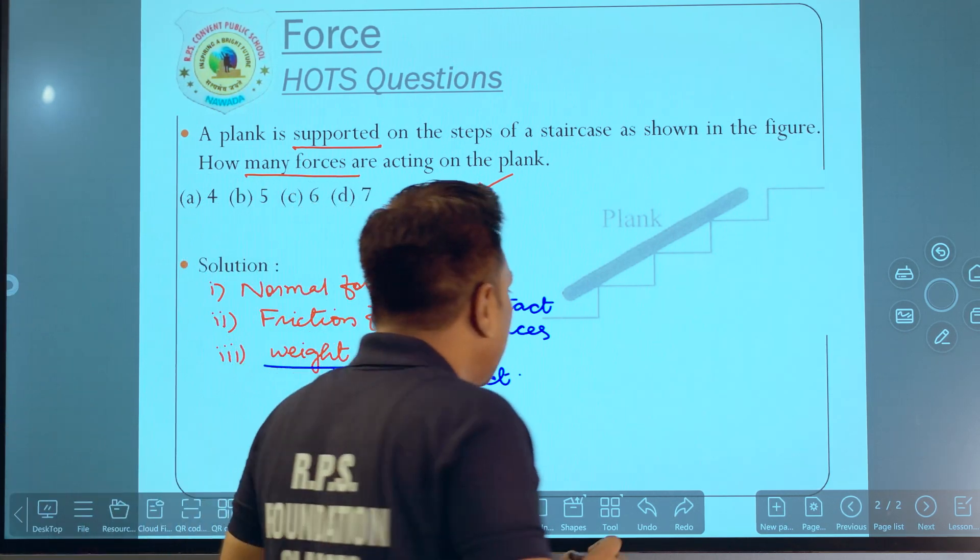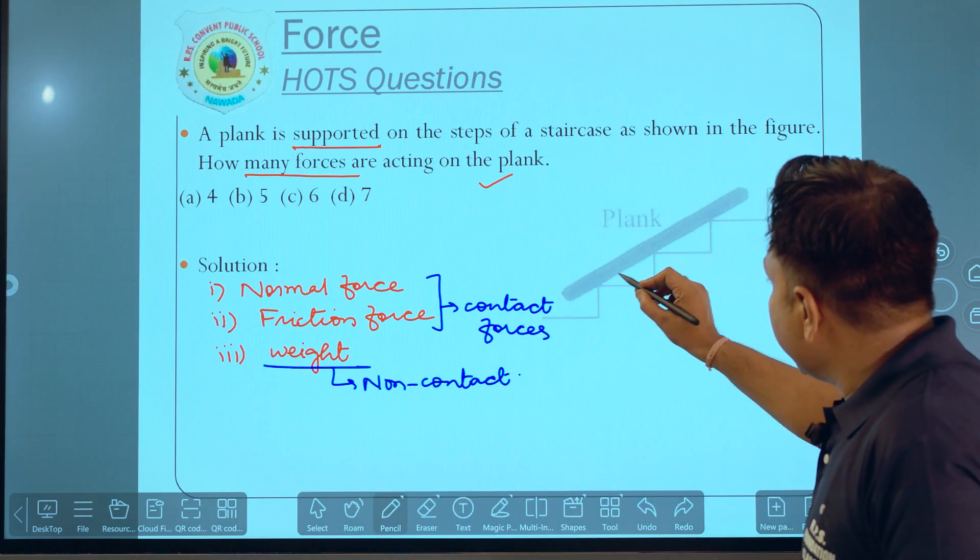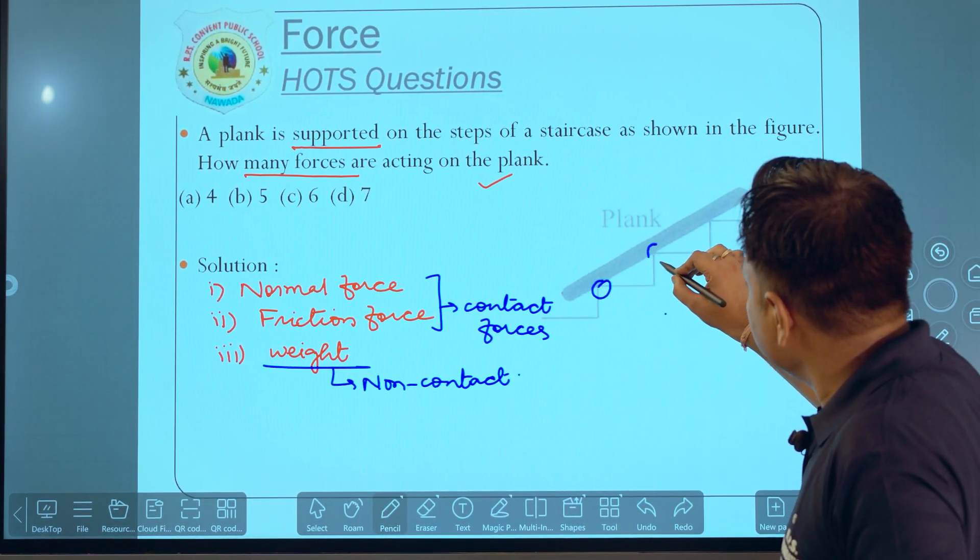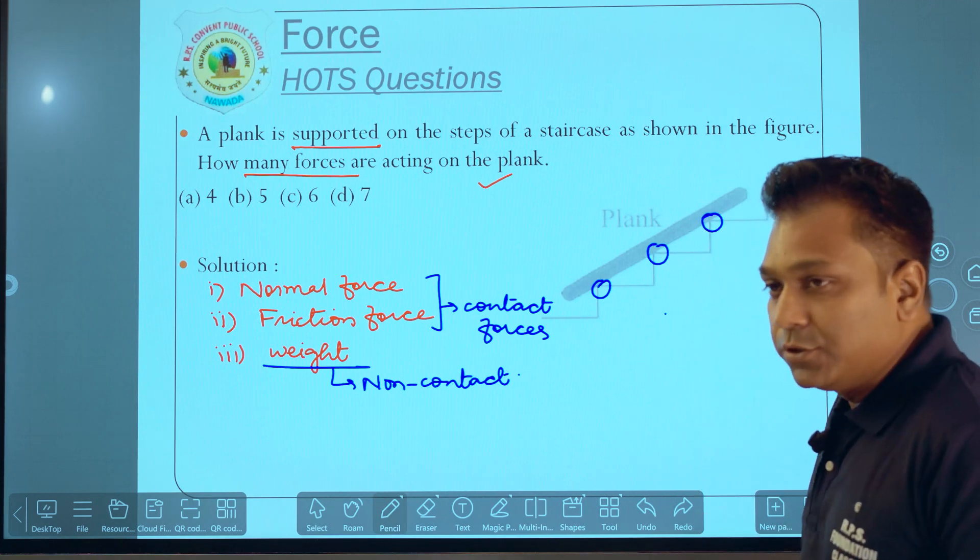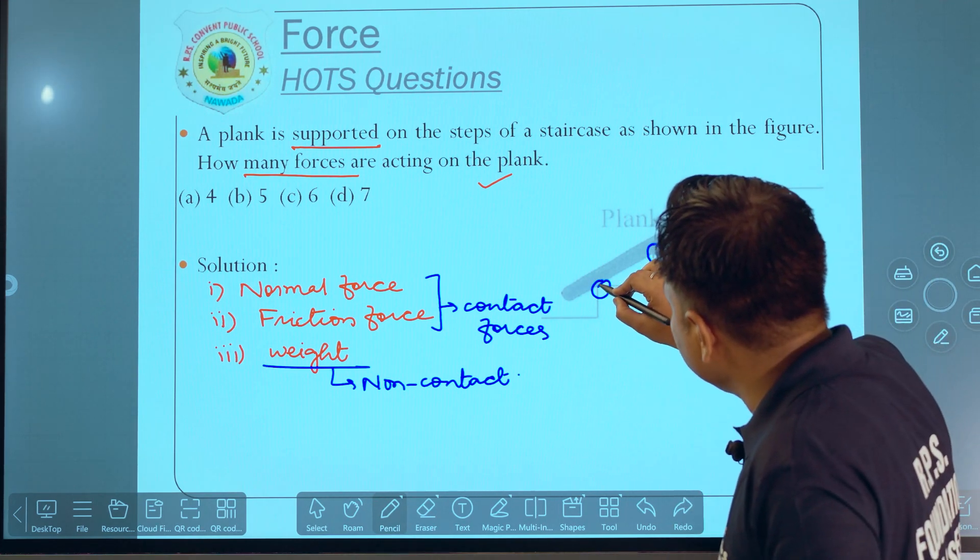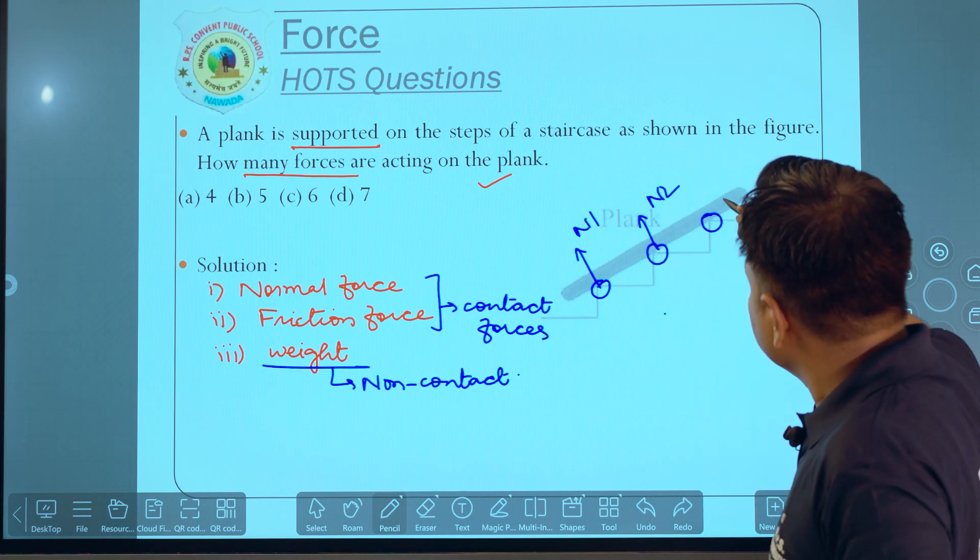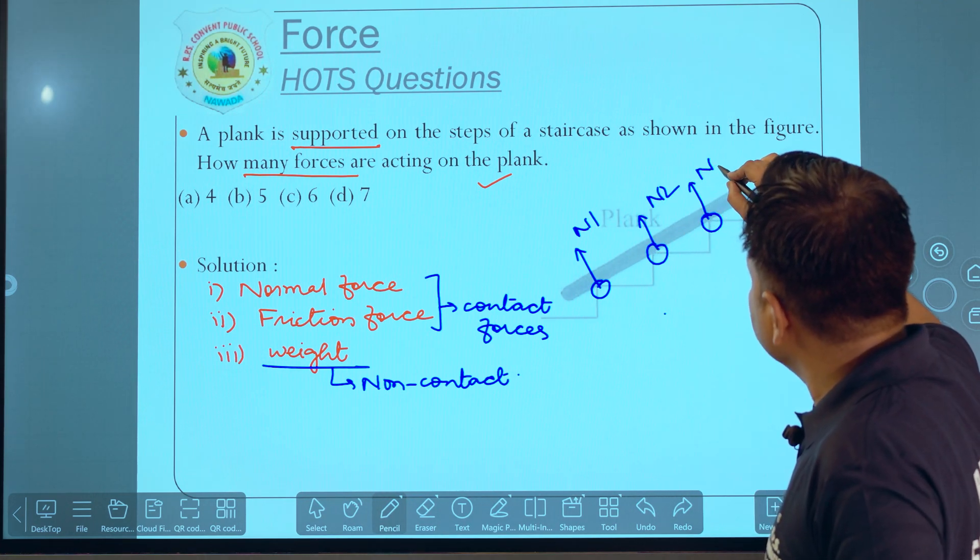So to start with, to solve this numerical, now see here, the plank is in contact at 3 points: 1, 2 and 3. So at these 3 points, we will have the 3 normals: normal 1, normal 2, and this is your normal 3.